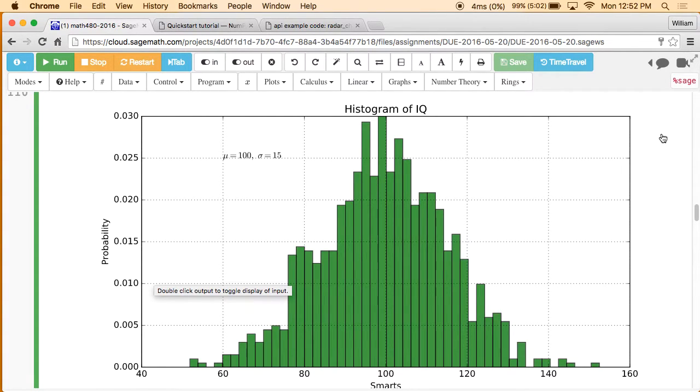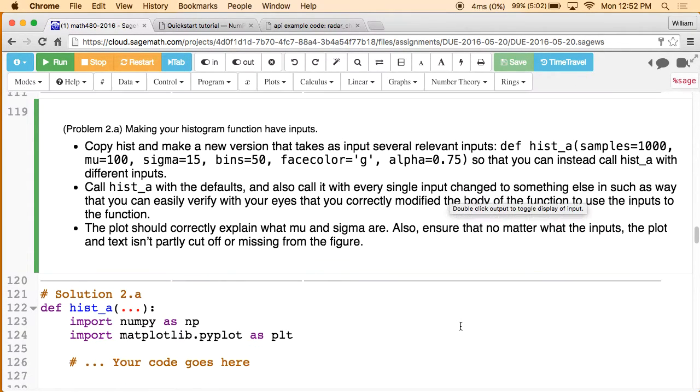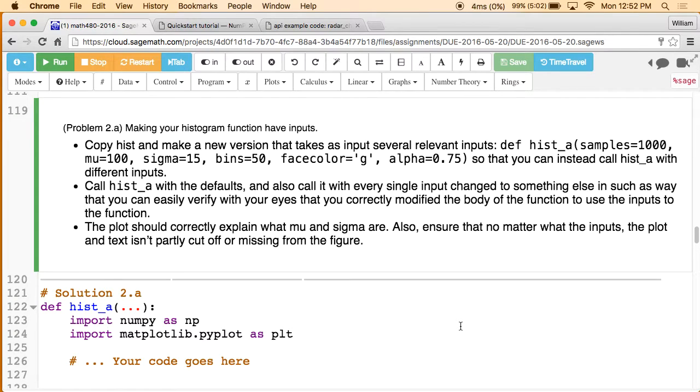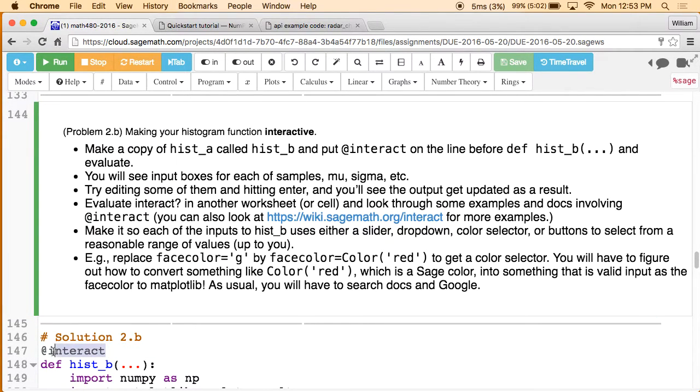What you're going to do is do a bunch of things with this histogram. You'll change it so that the function takes inputs and then instead of just drawing everything, it'll be parameterized by those inputs. So you'll be able to change the color of the histogram, et cetera, just by changing the inputs to the function. Then the next thing you'll do is you'll put this little decorator, this is a Python decorator, right before the function you had above and it will turn every single one of the inputs into a little control where you'll be able to type a number and then right when you type the number it'll update the output.